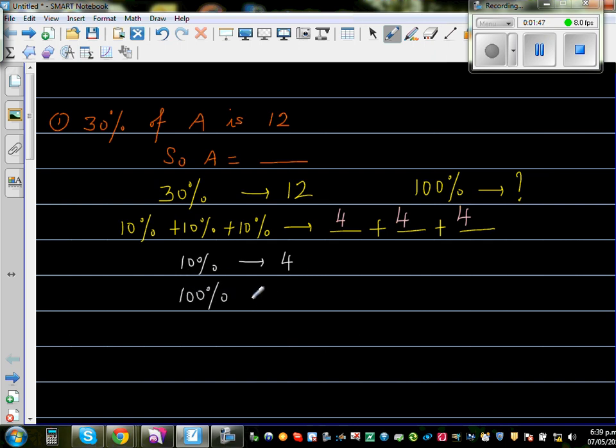So you think like this. 10 goes in 100, or there are how many lots of 10 in 100? Well, 10 times 10 is 100. So there are 10 lots of 10 in 100. So you do the same thing for this number. 4 times 10 is 40. So your A is 40.